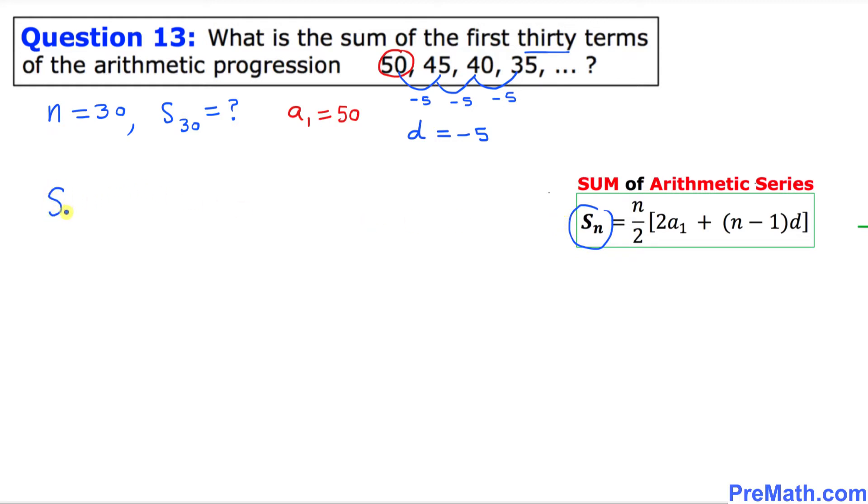So S of 30, I'm going to write down, equals to, in our case n equals 30, I'm going to write down 30 divided by 2 times 2 times a1. In our case, a1 is 50, just write it down, plus n. N in our case is 30 minus 1 times d. The common difference in our case is negative 5.